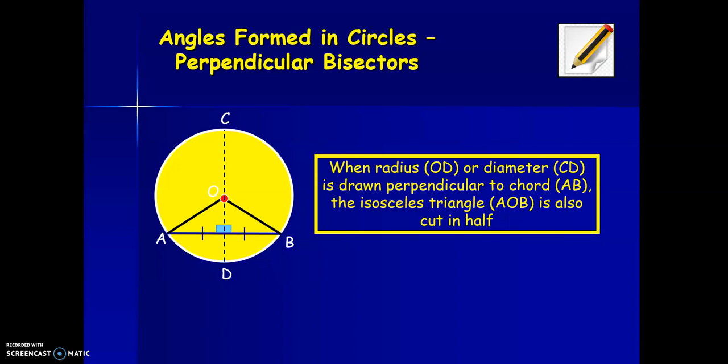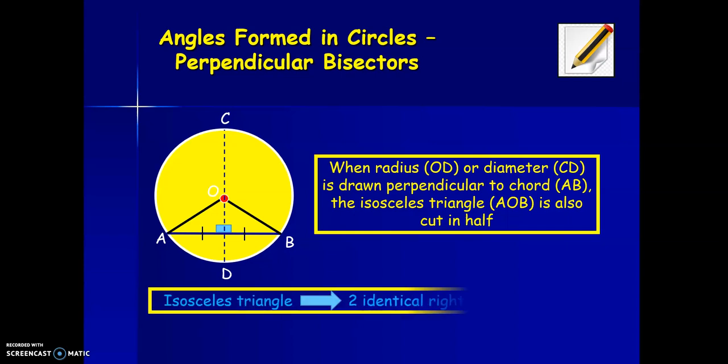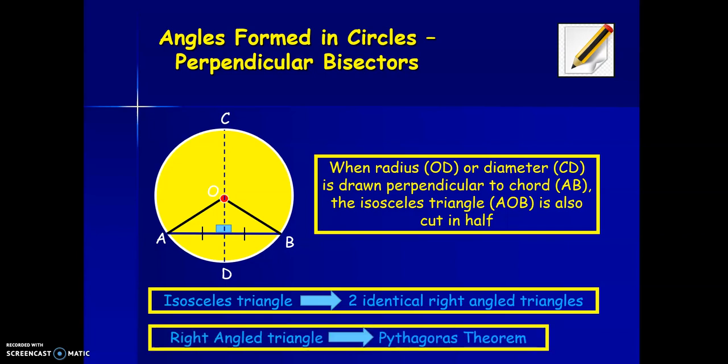When a radius or diameter is drawn perpendicular to the chord AB, the isosceles triangle AOB is also cut in half. We know that an isosceles triangle cut in half creates two identical right-angled triangles. And if we have right-angled triangles, then we can use Pythagoras' theorem.